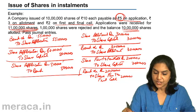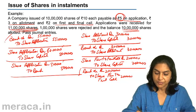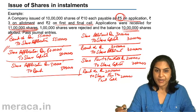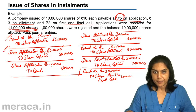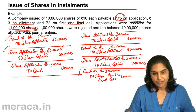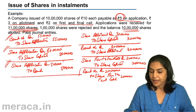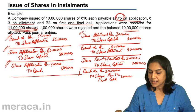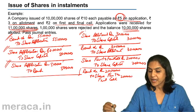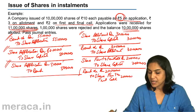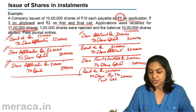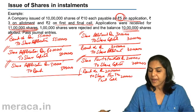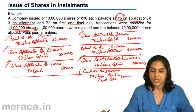This is the scheme of entries when shares are issued in installments. On receipt of application money: bank account to share application. On allotment: share application to share capital; excess money refunded via share application to bank. For allotment money due: share allotment account debit to share capital; money received: bank debit to share allotment. When the first and final call is due: share first and final call account debit to share capital; on receipt: bank account debit to share first and final call.